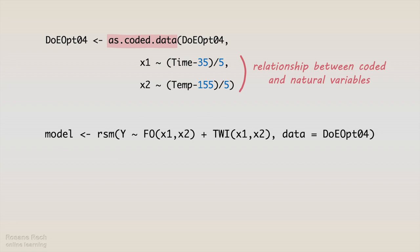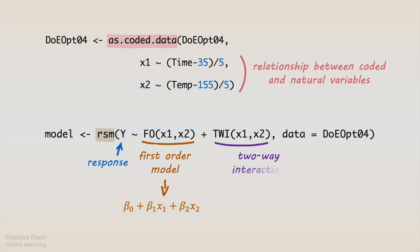The next step will be to run the regression model using the rsm function. We are going to build a model for the response yield y, as a first-order model fo for x1 and x2, and a two-way interaction twy between x1 and x2. Let's run the codes.